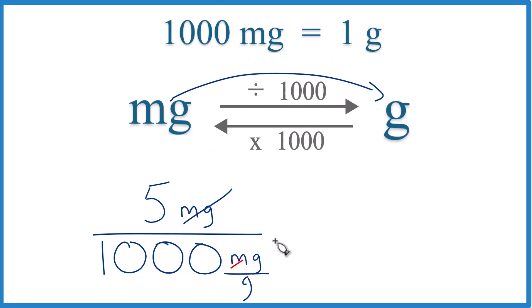This way, milligrams on the top here and here, they cancel out. So we're just dividing 5 by 1,000.